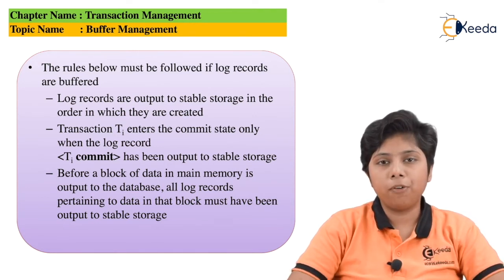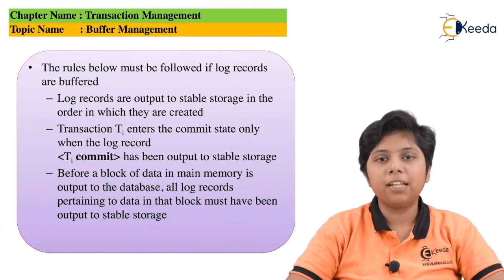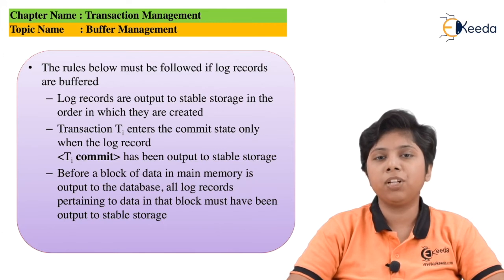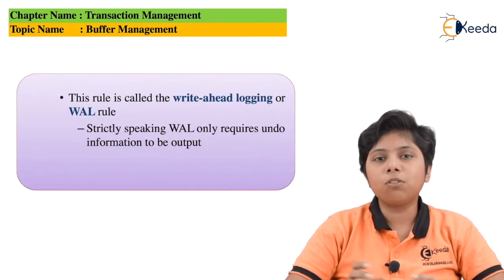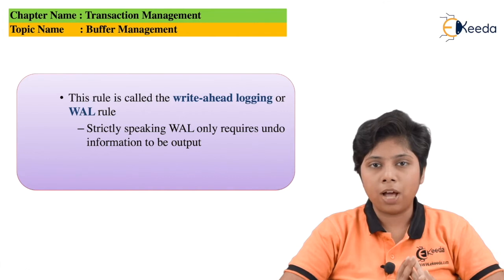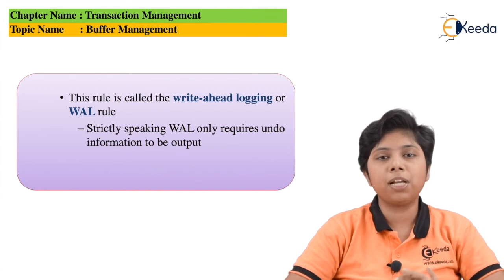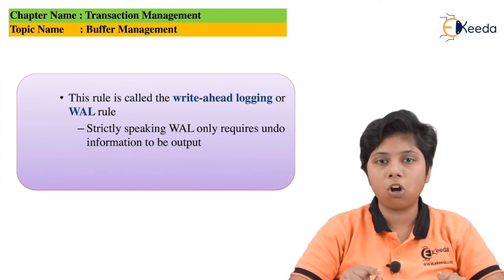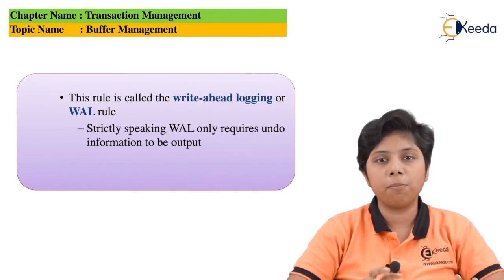As a result of log buffering, the log may remain in main memory (volatile storage) for a considerable period of time. After that, the log buffer is updated to the disk block. Now, what is write-ahead logging, or the WAL rule? There are three rules associated with WAL. The first is that before a transaction commits, we must write the commit record — the Ti-commit — into the log.